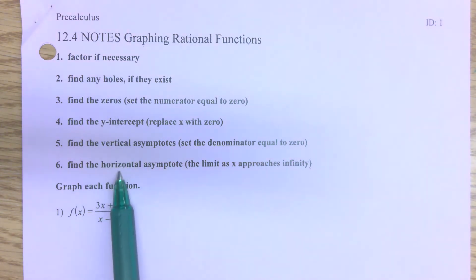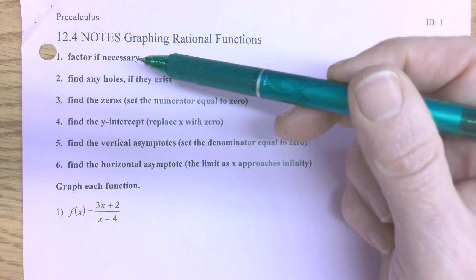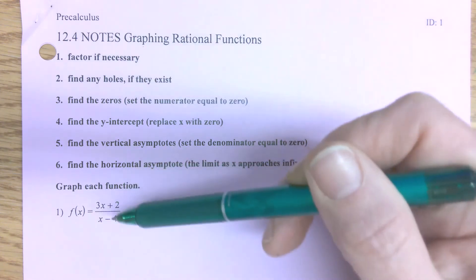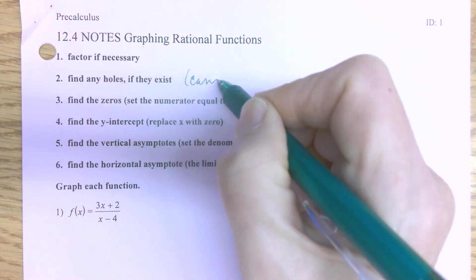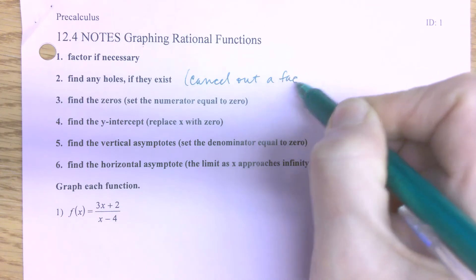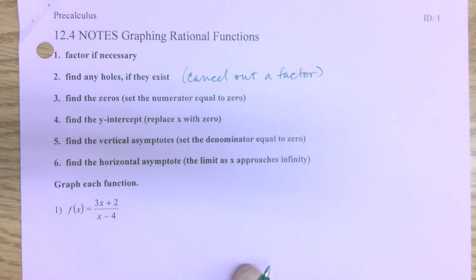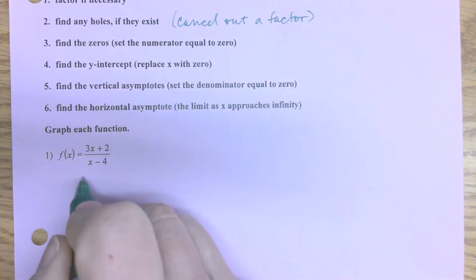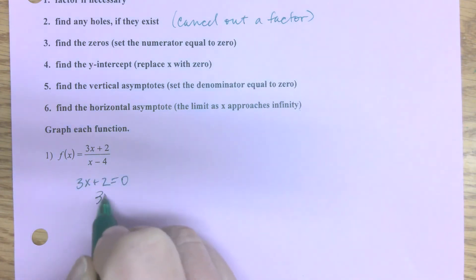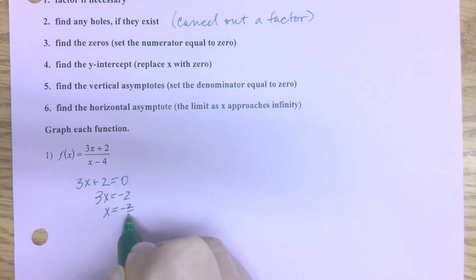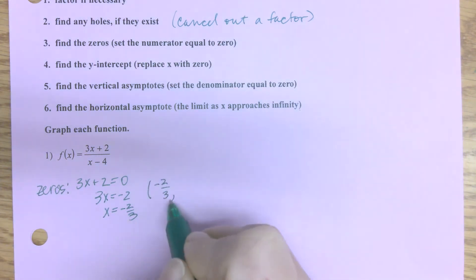We go through steps — it doesn't necessarily have to be done in this order, but it's an easy order to follow. First, we need to factor if possible. I can't do that on this first one. Then I'll find any holes. Holes happen if I can cancel out a factor, and on this first one I can't. Then I'll find my zeros by setting the numerator equal to zero: 3x + 2 = 0, so 3x = -2 and x = -2/3. So my zero is at (-2/3, 0).